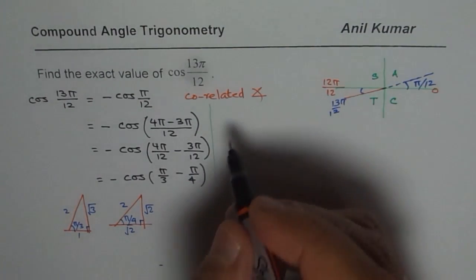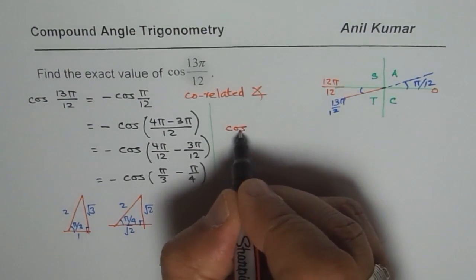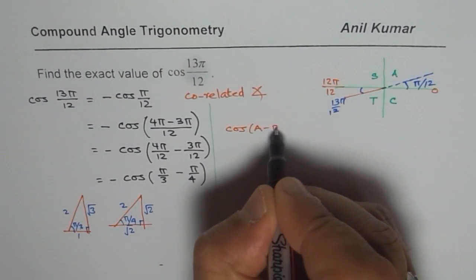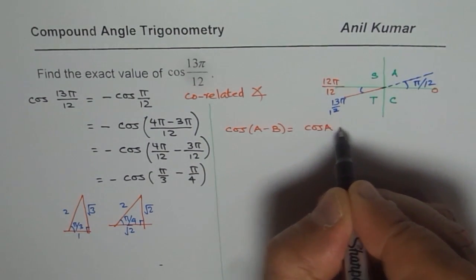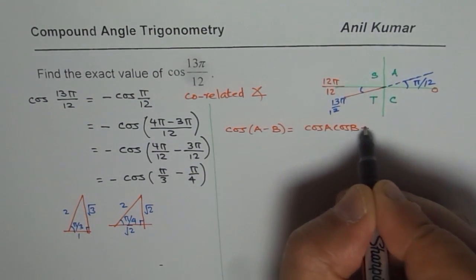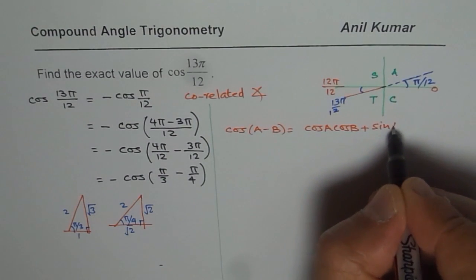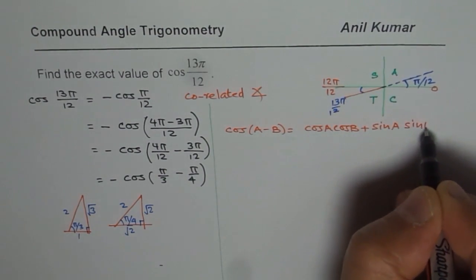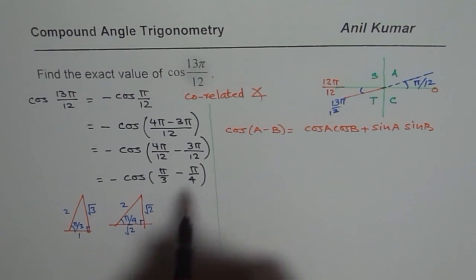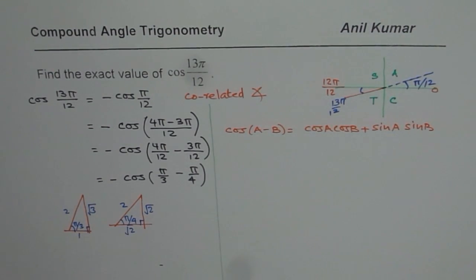Now, let us expand using the cos A minus B formula. Now, if you remember, what is cos A minus B? Let me write the formula here. Cos A minus B is cos A cos B plus sin A sin B. So, we will use this formula to expand and then these triangles to write down the exact values.